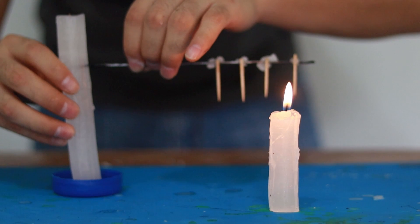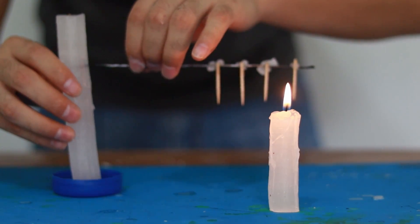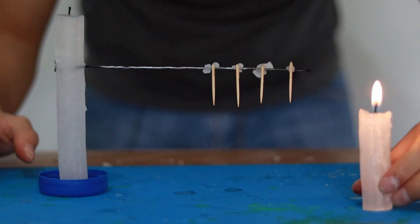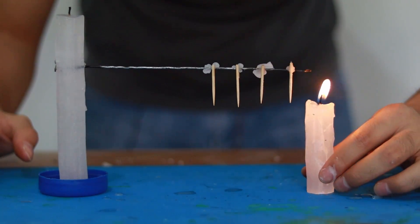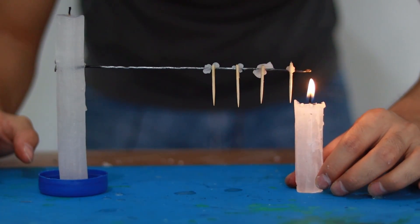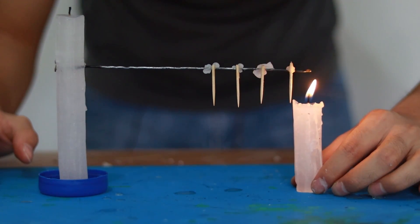Let's wait for it to cool down a bit. There it is. Now we are going to place the smaller candle at the end of the wire where our toothpicks are.